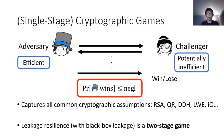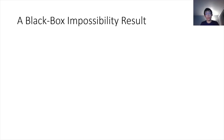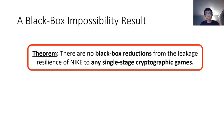As a counterexample, leakage resilience, at least with respect to black-box leakage, is a two-stage game where there are two stages of adversaries: one leaker that will generate the leakage, and one distinguisher that gets the leakage, and those adversaries cannot communicate with each other. The impossibility result states that there cannot be any black-box reduction from the leakage resilience of a NIKE to any single-stage cryptographic game, where by black-box reduction I mean a reduction that treats the adversary and the leakage function as black boxes.